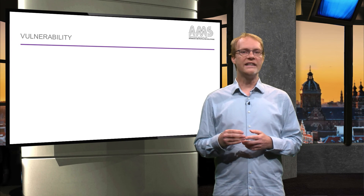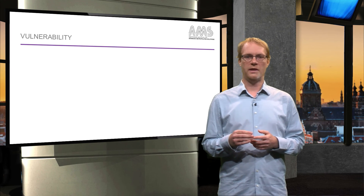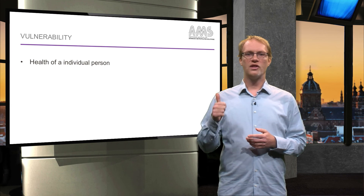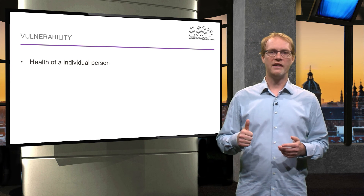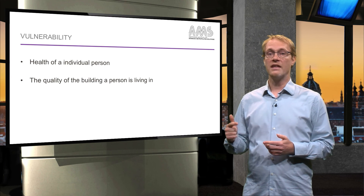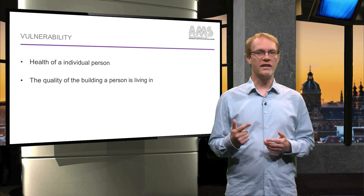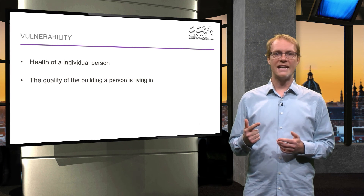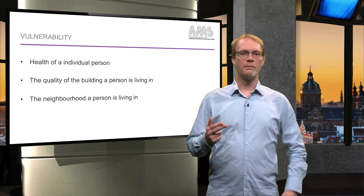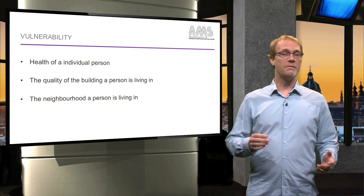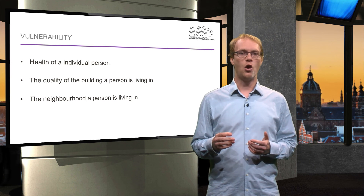How vulnerable a specific person is depends on three aspects. The first is the condition of the individual person — elderly and sick people are specifically vulnerable. Then, the building the person is living in: can their house be cooled, is it well insulated or not, is sun shading available or not? And third, the neighbourhood a person is living in: do neighbours take care of each other, and are health and other social services available or not?